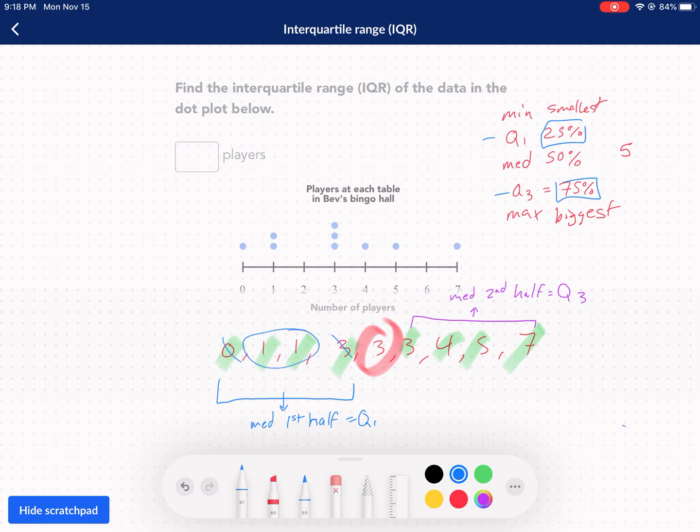left, right, and we land on two. Usually, you find the average between those two, but if we do it, it's just going to get one. One plus one divided by two is just one. One is our Q1.